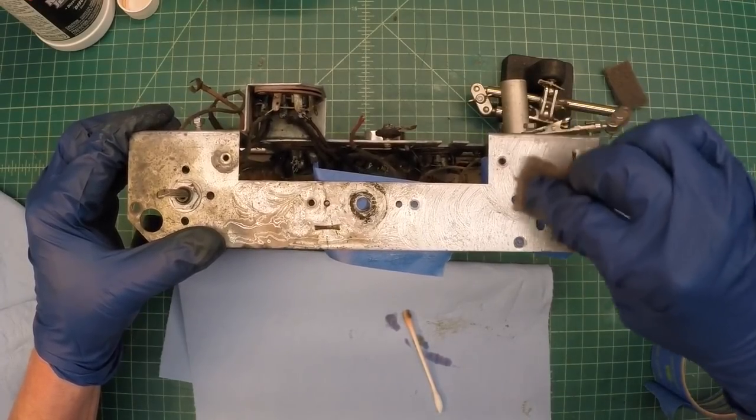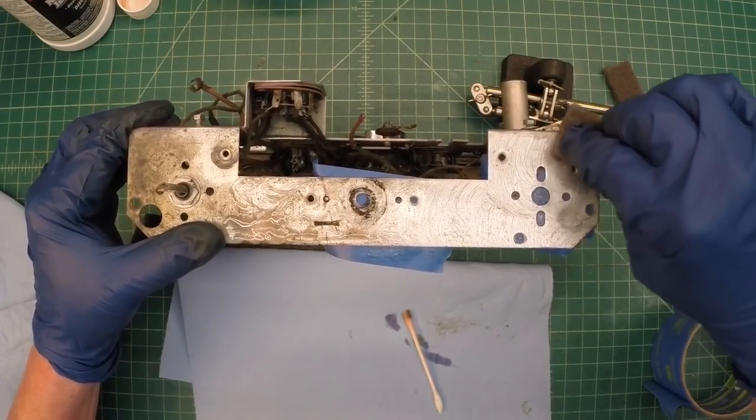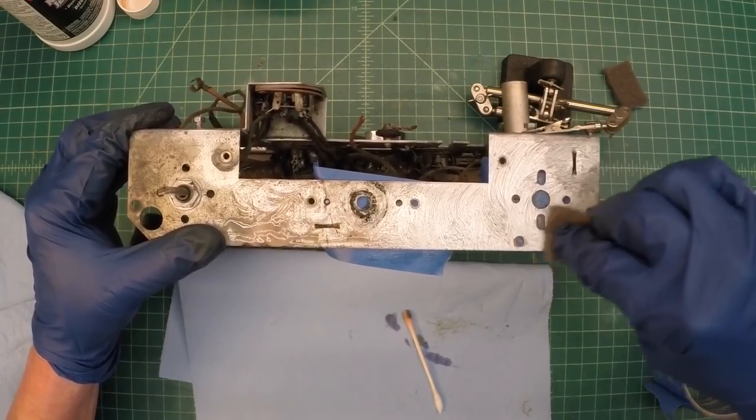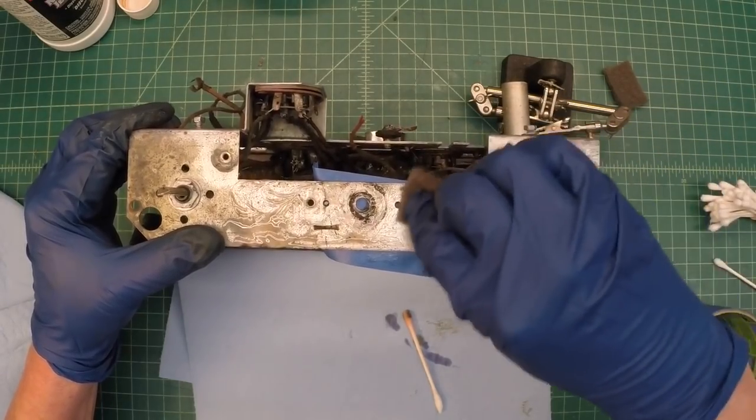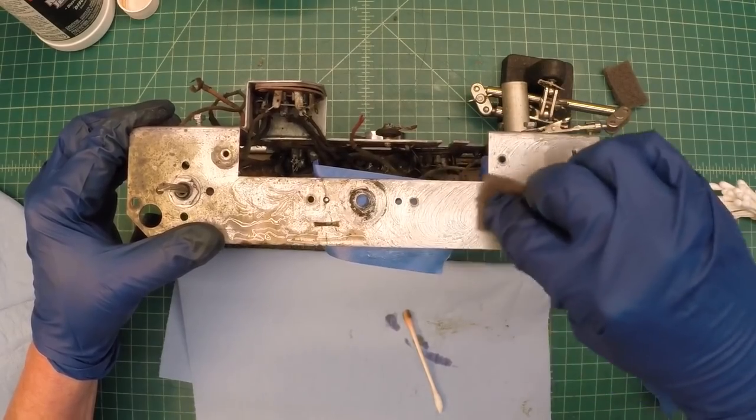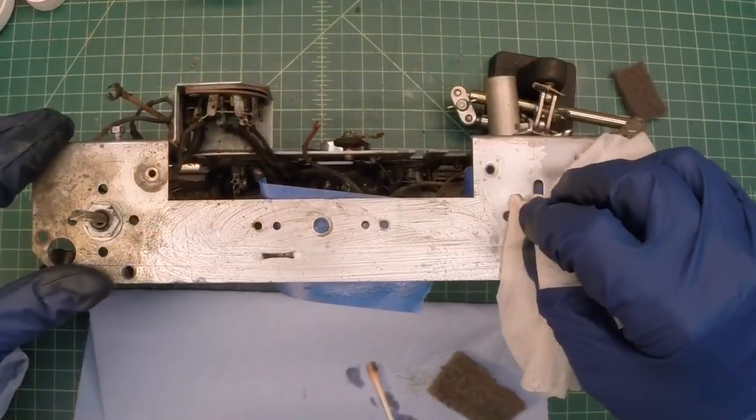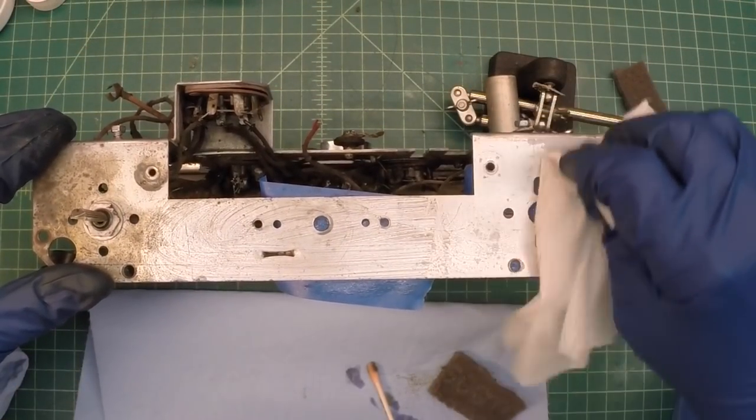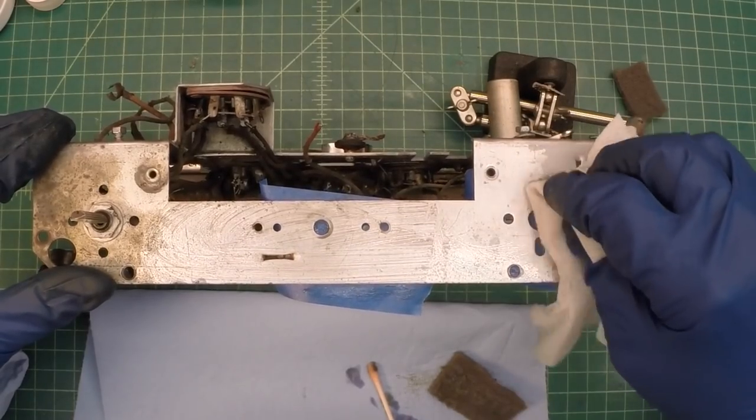Hi folks and welcome back. Thanks for joining me. You can see I'm still wrapping up here on the rust removal using my Scotch-Brite pad number 7448 with a little naval jelly and just wiping it off and continuing that process.